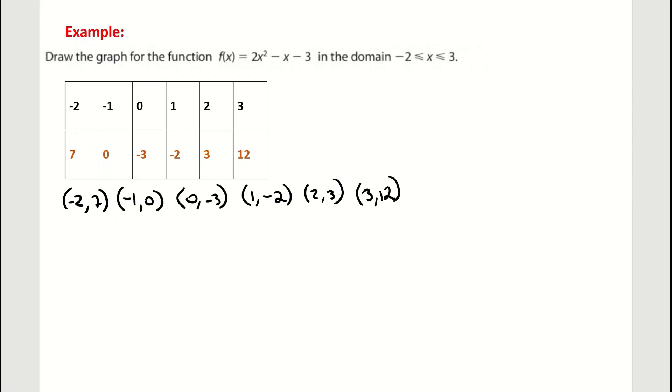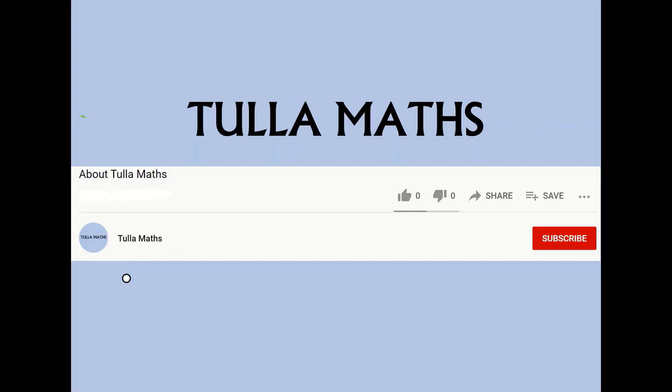And they would be the 6 points that I would then sketch onto my coordinate graph in order to plot that function. And that's how to use our calculator using the table or the graphing function in order to find our points. Hope it helps. Thank you for watching another tutorial video from Tullamaths. Make sure and subscribe.